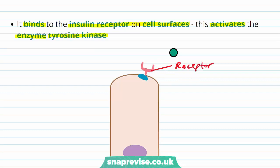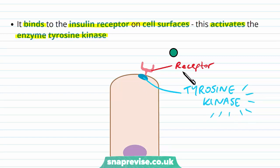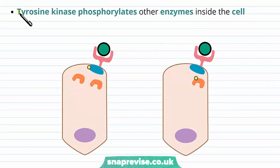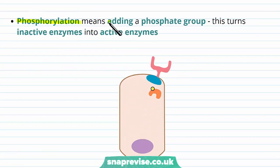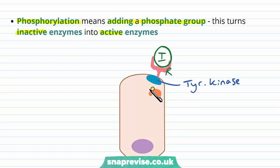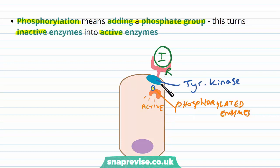This binding activates an enzyme attached to the receptor known as tyrosine kinase. Here's the receptor, and there's an enzyme closely linked with it called tyrosine kinase, which becomes active once binding has happened. The purpose of tyrosine kinase is to phosphorylate other enzymes in the cell — those enzymes go from a state of not having phosphorylation to now being phosphorylated. Phosphorylation means adding a phosphate group onto something. When we add a phosphate group onto these other enzymes, they go from being inactive to active. So insulin binds to its receptor activating tyrosine kinase, which in turn phosphorylates other enzymes in the cell, making them active.